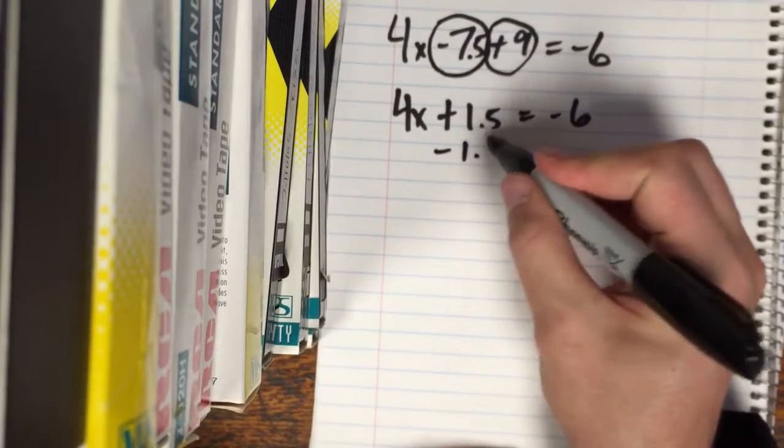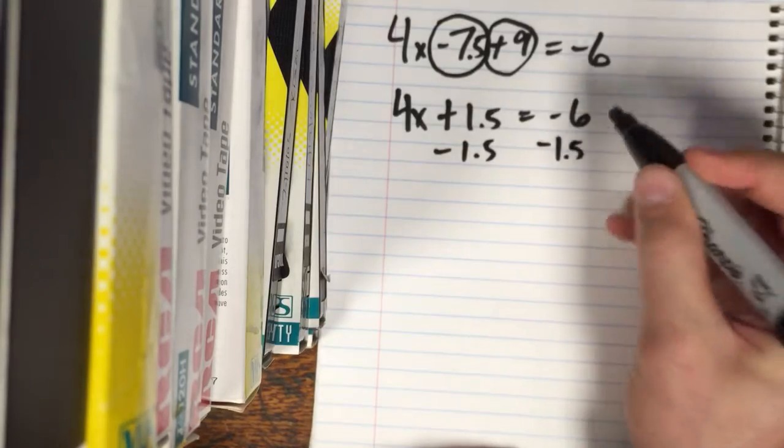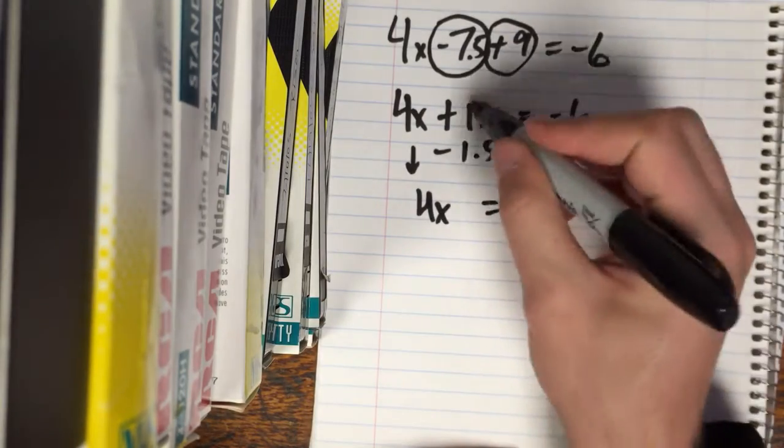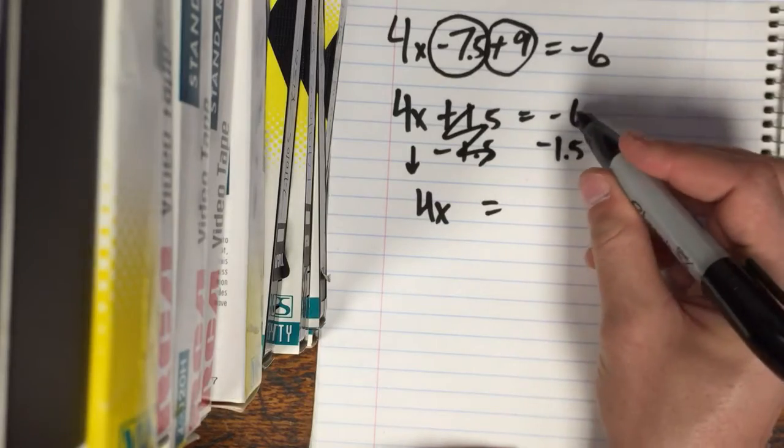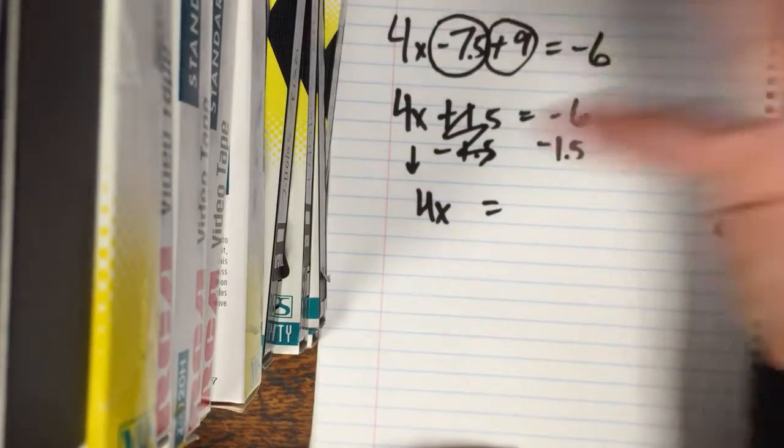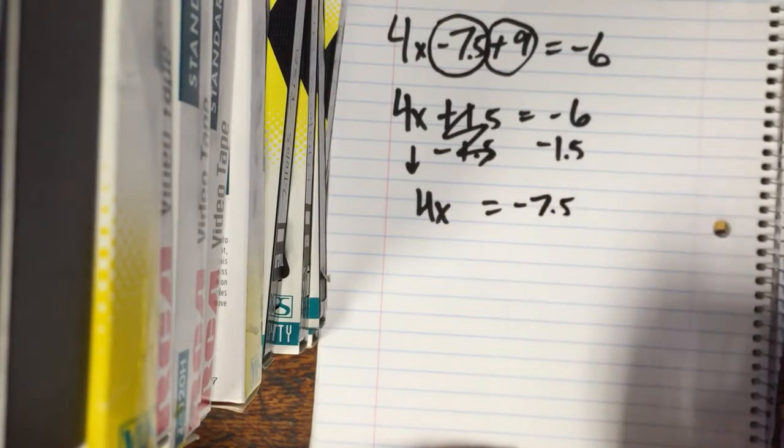Okay this time we got to do the opposite and subtract 1.5 bring down the 4X that cancels out. And that would be negative 6 minus 1.5. It's gonna be a bigger negative. We're gonna go further in the negative zone. Negative 7.5.